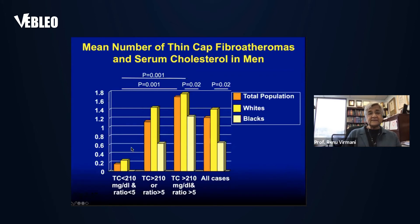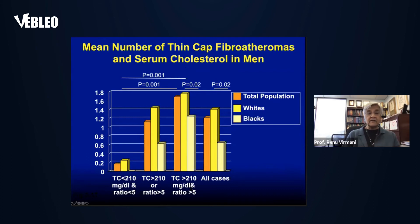The mean number of thin cap fibroatheromas correlates with total cholesterol. If total cholesterol is less than 210, there are very few. If cholesterol is greater than 210, you will have more than one thin cap fibroatheroma. If there is a total cholesterol to HDL ratio greater than 5, the number of thin cap fibroatheromas increases further.